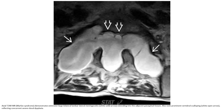T2-weighted imaging in Marfan syndrome demonstrates extensive large bilateral lumbar lateral meningoceles extending into the adjacent paraspinal tissue, also known as prominent vertebral scalloping, reflecting concurrent severe dural dysplasia.